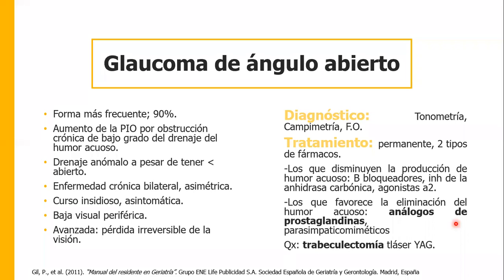El tratamiento es permanente por vida y hay dos tipos de fármacos. Los que disminuyen la producción de humor acuoso, como los betabloqueadores —el timolol es el más común—, los inhibidores de la anhidrasa carbónica y los agonistas alfa-2. Y los que favorecen la eliminación del humor acuoso, como los análogos de la prostaglandina, que son los de elección para glaucoma de ángulo abierto, y los parasimpaticomiméticos. Si el paciente no remite, el tratamiento quirúrgico es la trabeculectomía con láser YAG.